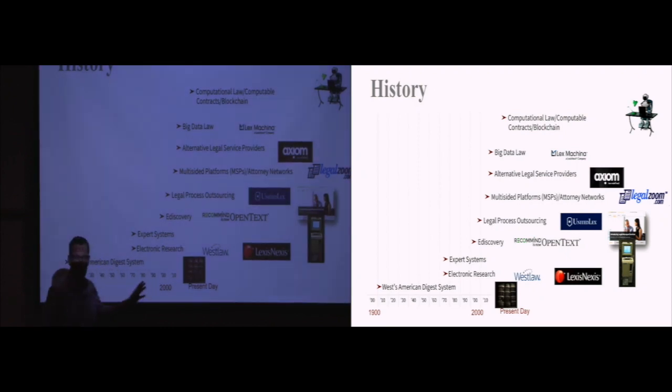In the late 50s, the pioneers in AI already started thinking about how artificial intelligence can be applied to the legal domain. But this became a more serious effort in the late 60s and 1970s when we started to have the first electronic research systems. Then legal expert systems became a thing. In the 90s, e-discovery, and around the 2000s legal process outsourcing. Attorney networks, multi-sided platforms, alternative legal service providers started to become an important innovation. Around 10 years ago, we heard big data law for the first time. And now all the way up to computational law, computable contracts, blockchain, which are the new focus areas of the legal innovation community.